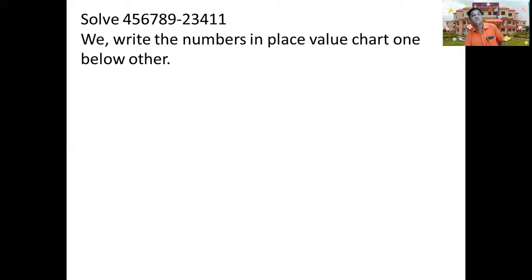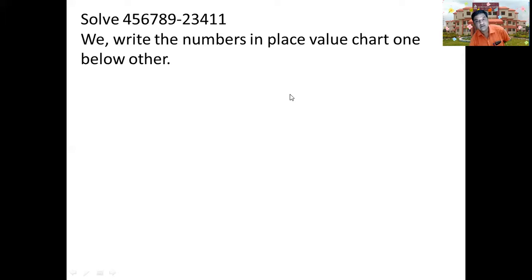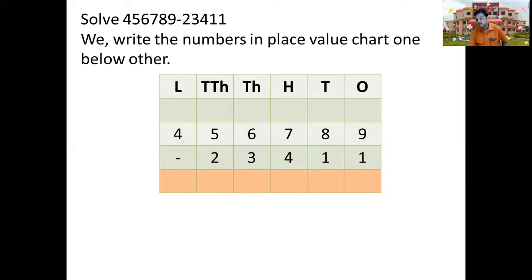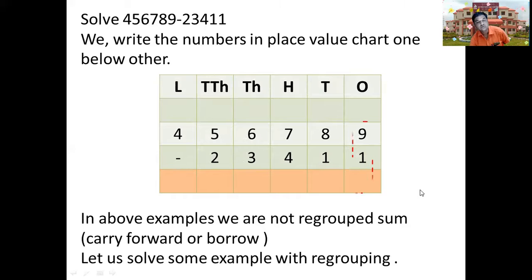Let us see an example of subtraction. We are going to subtract 23,411 from 456,789. The procedure or method is the same — we write the numbers in the place value chart so their places come one below the other. We write 456,789 minus 23,411. In the ones place we have 9 minus 1, so subtracting 1 from 9 we get 8. In the tens place we have 8 minus 1, giving us 7.